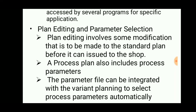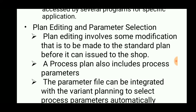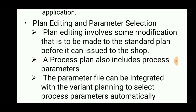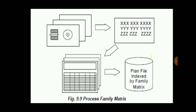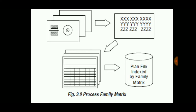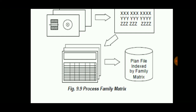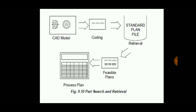If a defect is present in the plan, it will not satisfy the customer, so it needs to be edited before issuing to the shop. A process plan also includes process parameters, and the parameter file can be integrated with the variant planning to select process parameters automatically. The process plan sheets are then coded and stored in a file for retrieval. The workflow is: CAD model → coded → standard plan file → retrieval by computer.